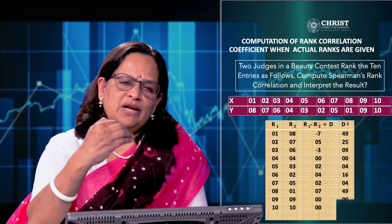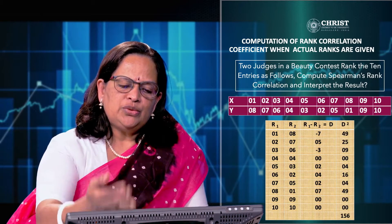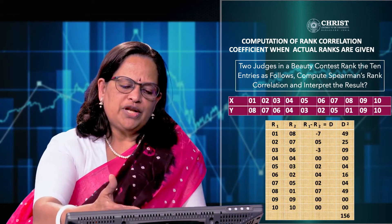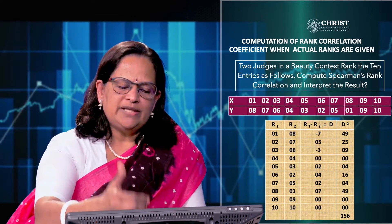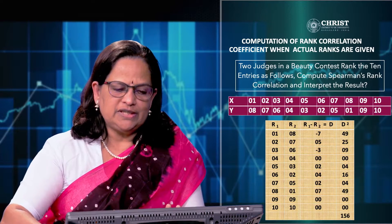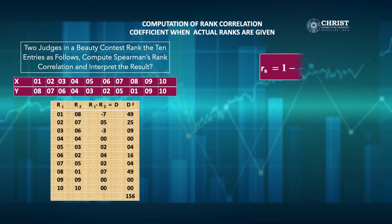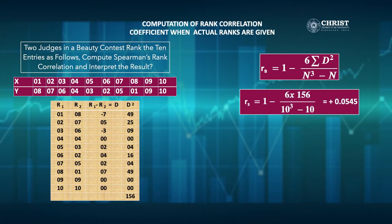Next, we calculate the d² values: 49, 25, 9, 0, 4, 16, 4, 49, 0, and 0, giving a total Σd² = 156. We substitute into the equation: rs = 1 − (6 × 156) / (10³ − 10).